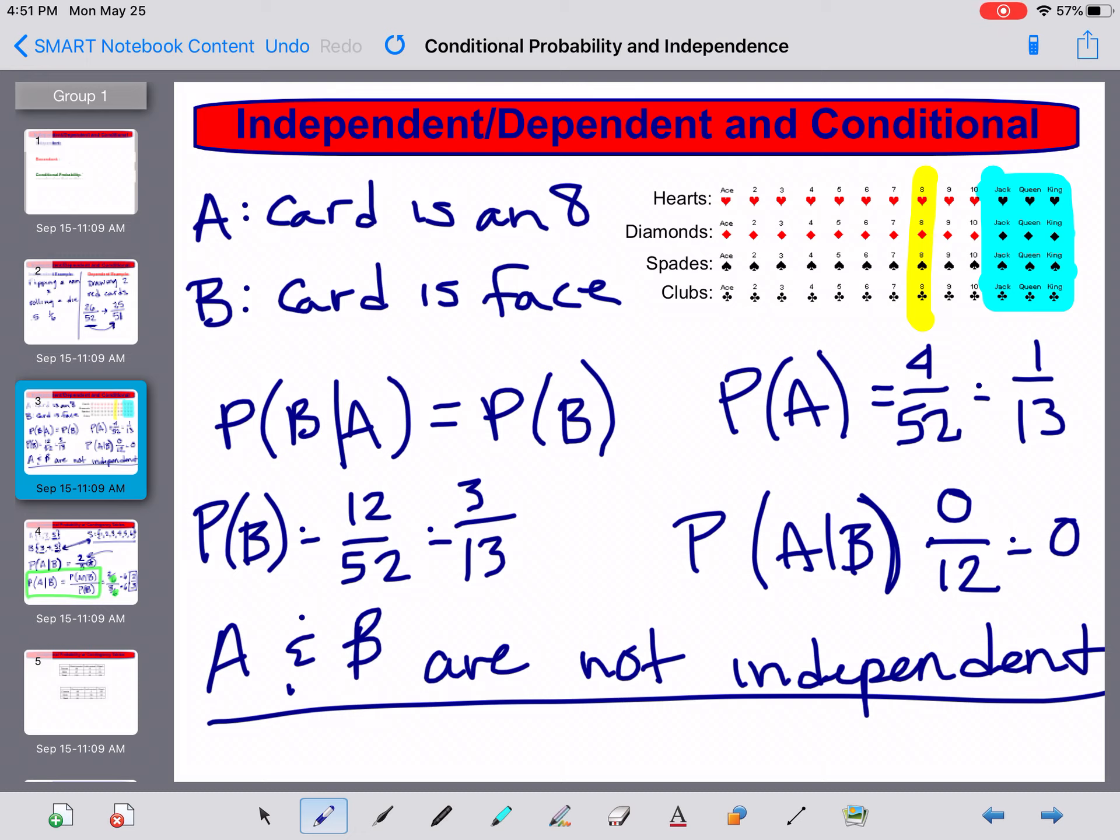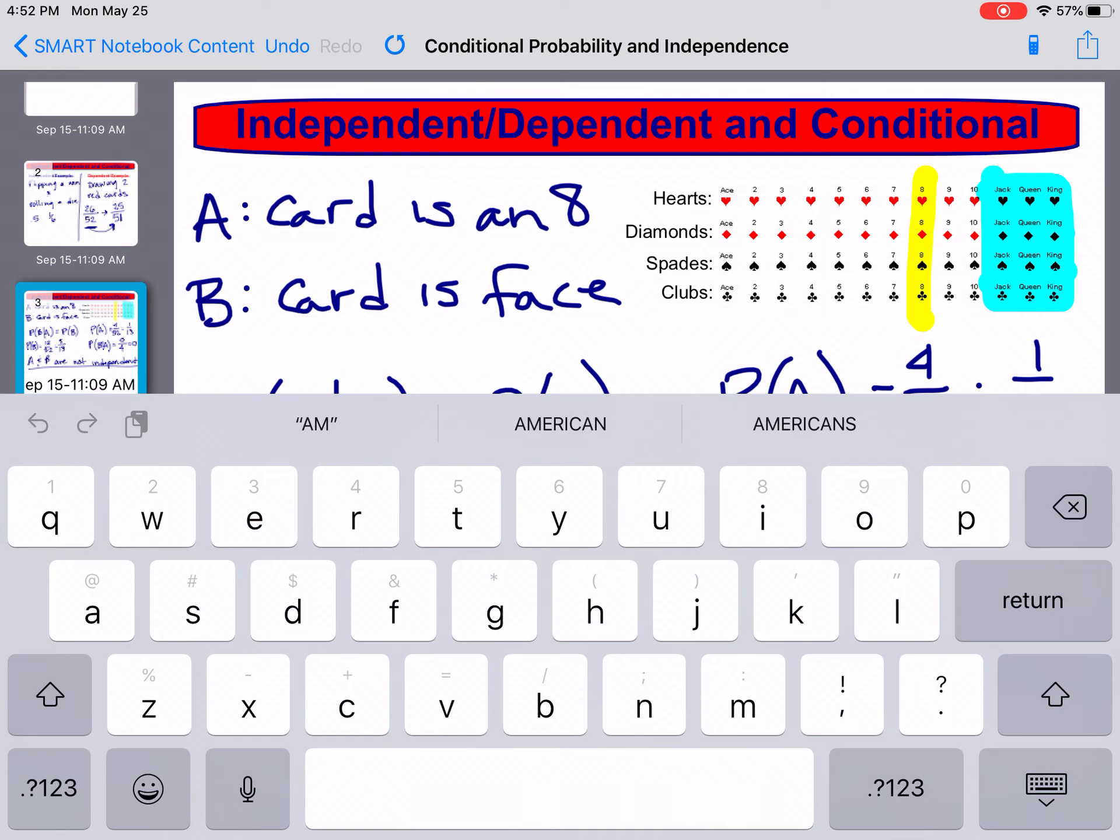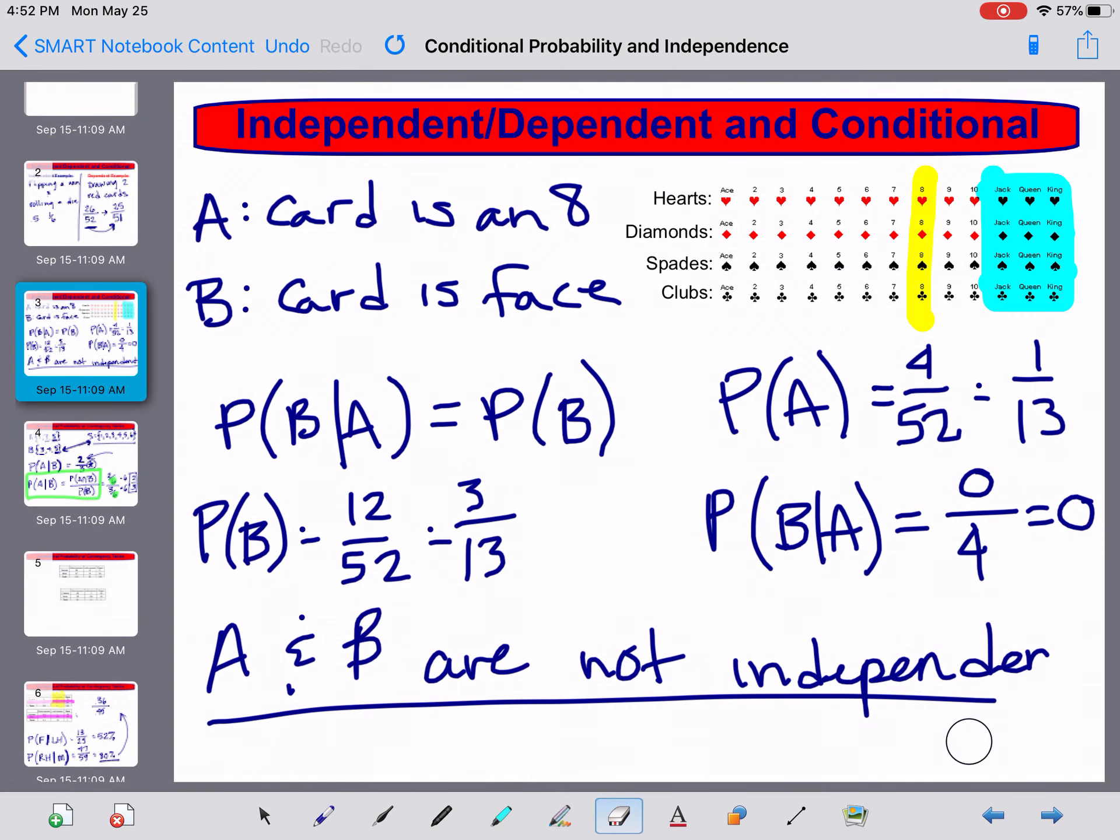And then the probability of B given A, so if A is the card is an 8, well that narrows my world down to just 4, and then B is that it's a face card. Again, I don't have any face cards within those 8s, so that's a 0. So again, I still don't have the same probability. So I can do this for any kind of conditional property or any intersection and say, are these independent or dependent events? And I can use math to determine that.